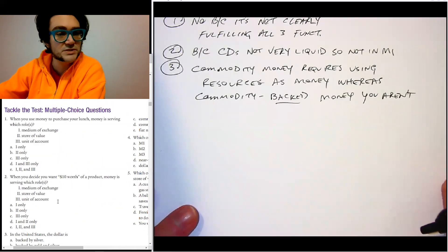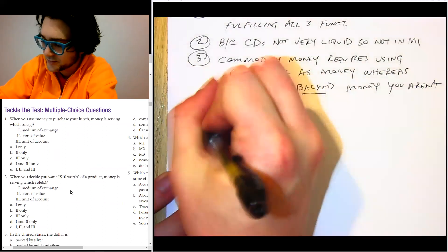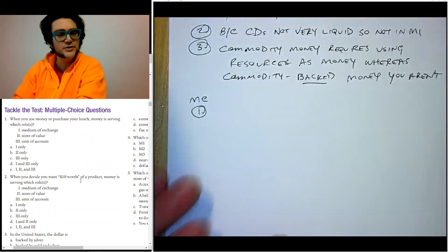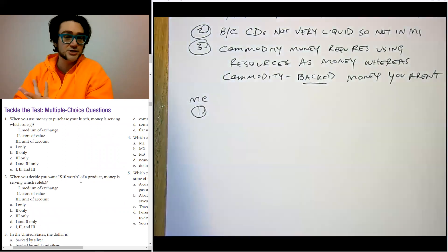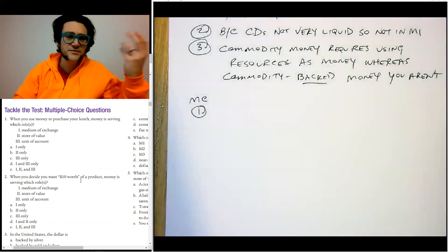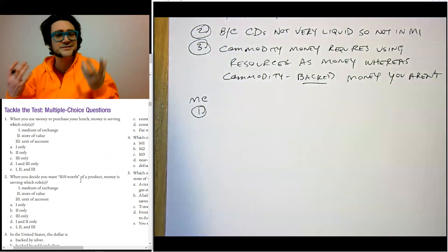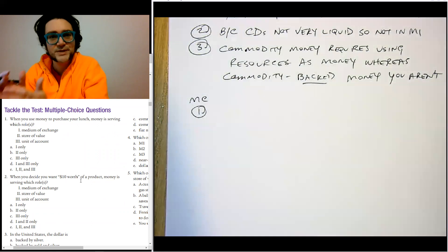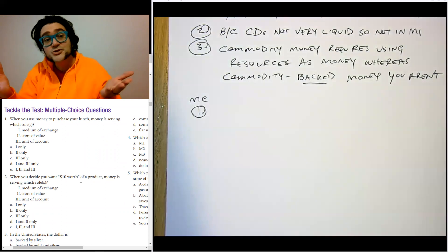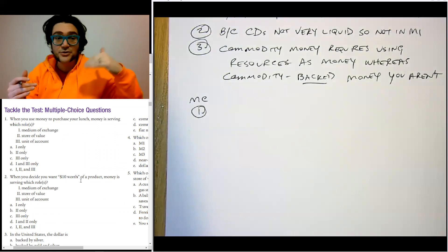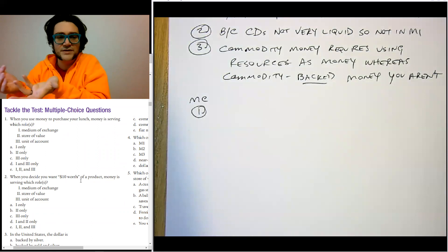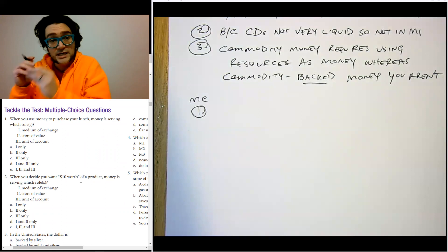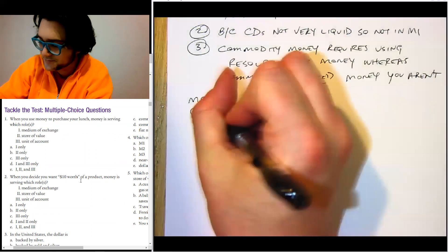Let's take a look at some of these multiple choice questions. When you use money to purchase your lunch, money is serving as, okay, so this one's a functions of money question, and we know that when you buy your lunch, you're using it as a medium of exchange. Now, there are some students over the years who have argued with me and said, well, it's also a unit of account, because you're measuring the value of it. No, quit bothering me. The primary purpose of the money in this case is medium of exchange. So the correct answer here is medium of exchange. That's the only one.